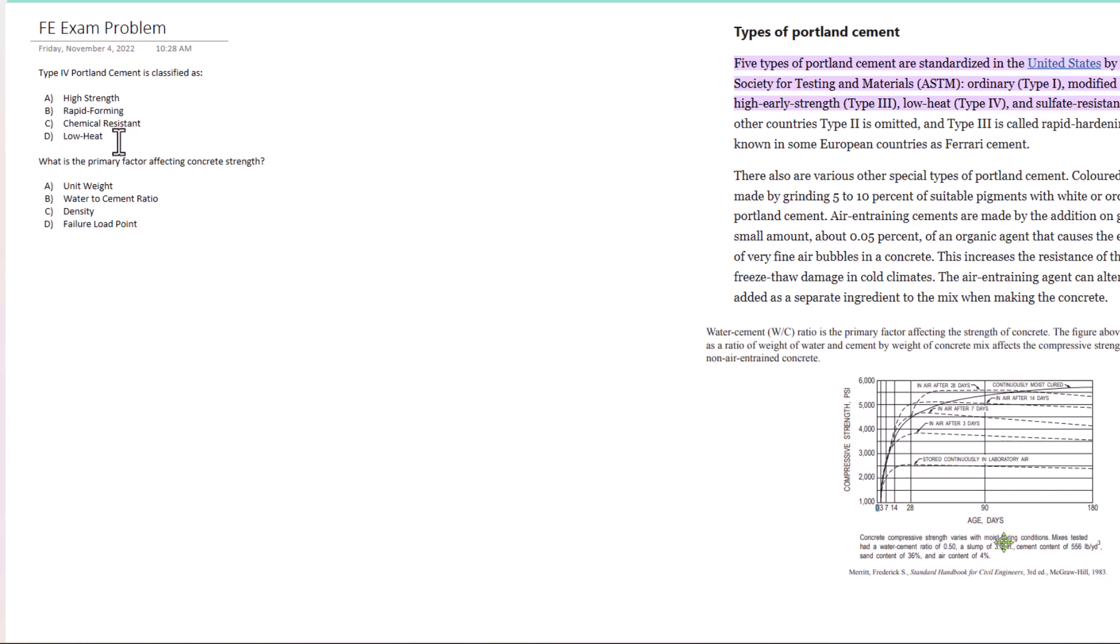If you know the answer right off the bat, that's great. But if you don't, how could you solve this without the excerpt? We know it could potentially be high strength, rapid forming is possible, low heat is possible, but chemical resistant doesn't make sense.